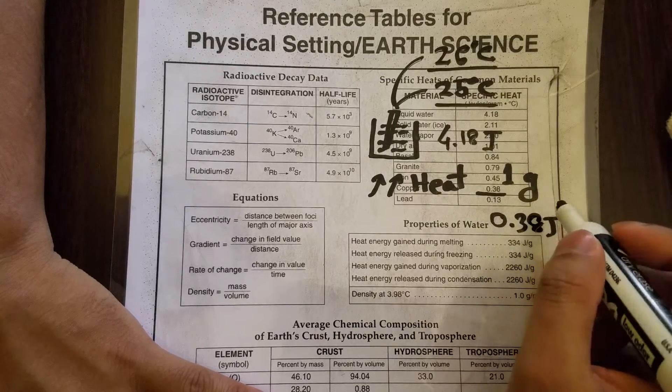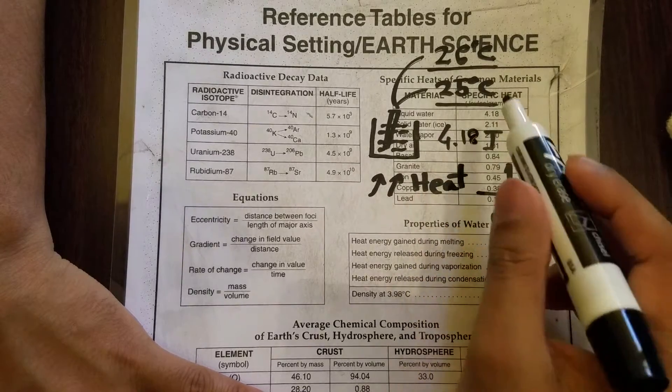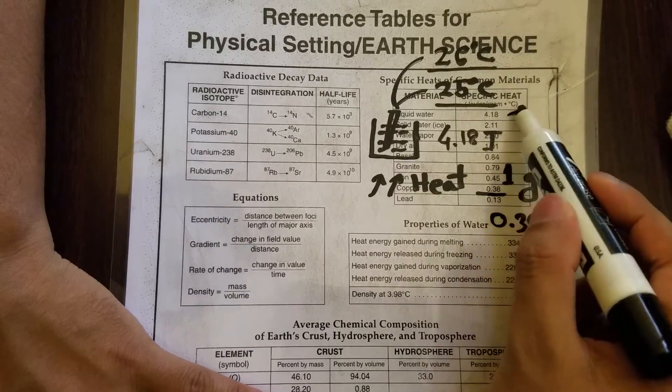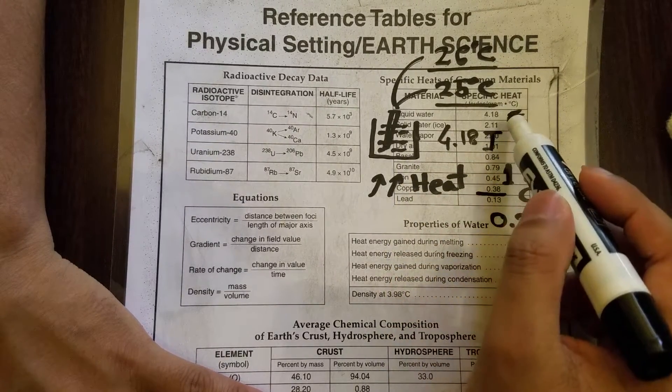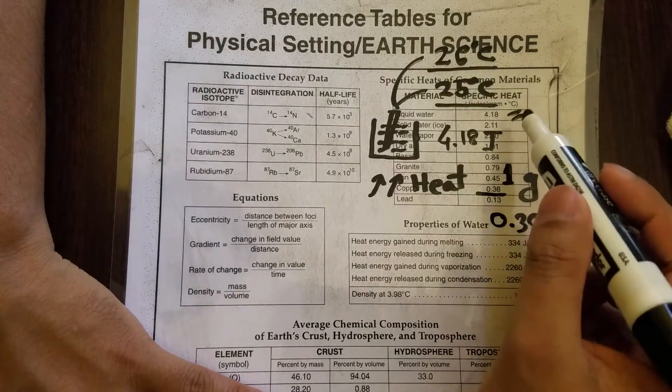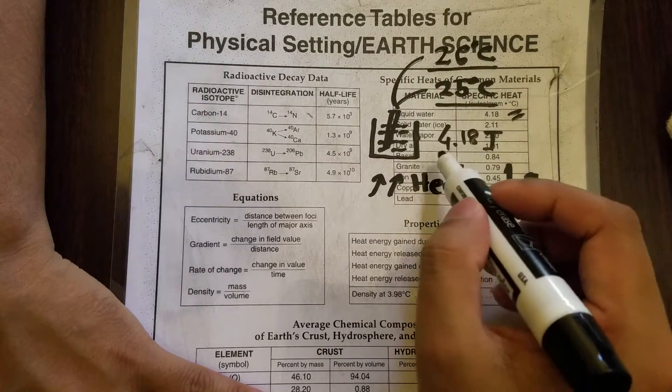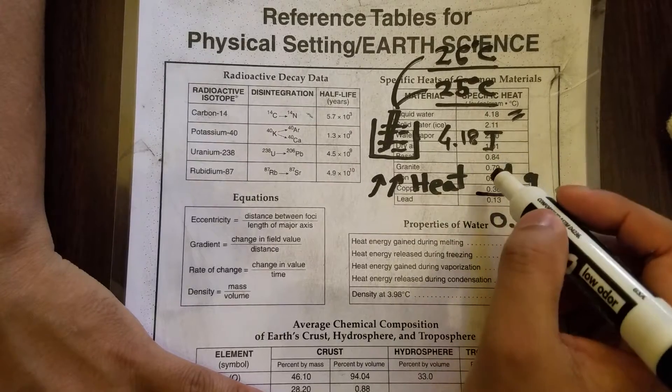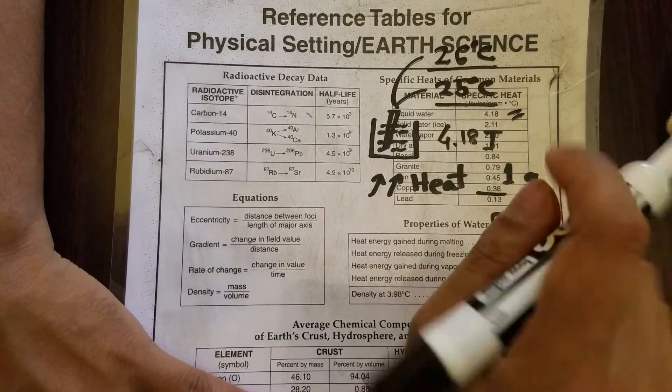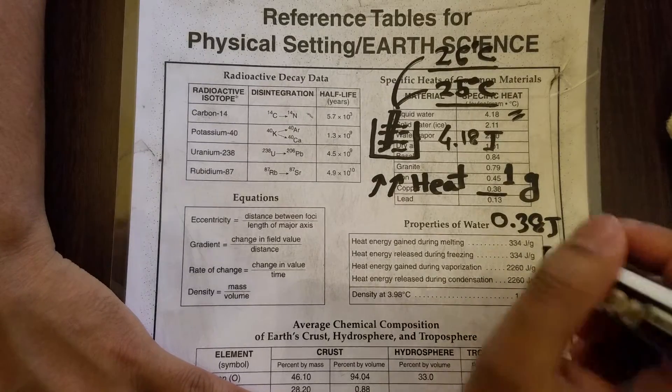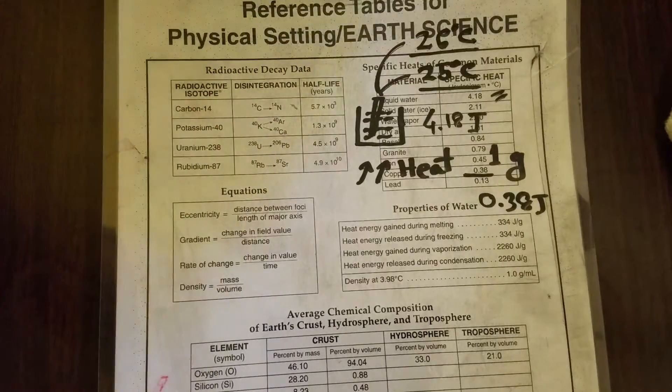Water has the highest specific heat as you can see. Among this chart, you can see liquid water is 4.18 joules per gram, and then we have solid water, ice, water vapor, and so on. All right, so I think you now know about specific heat.